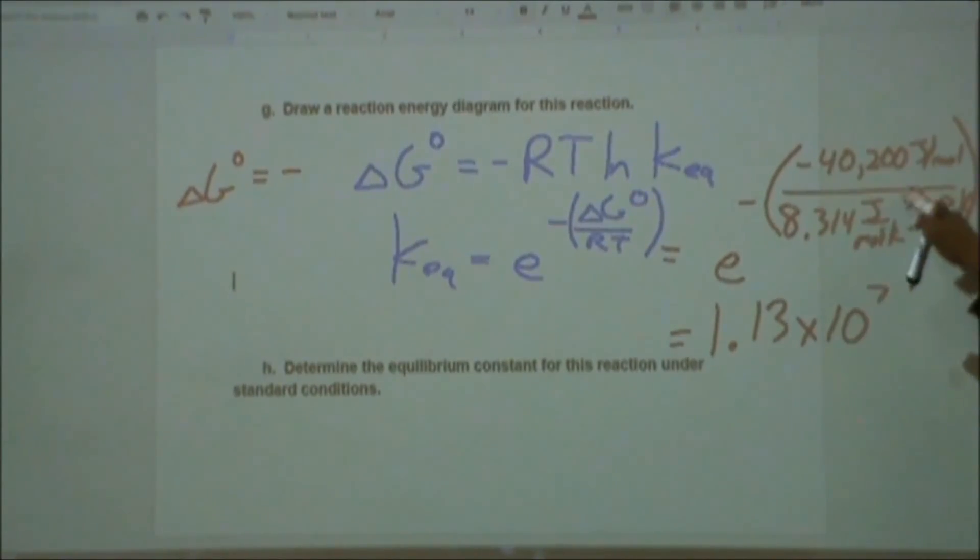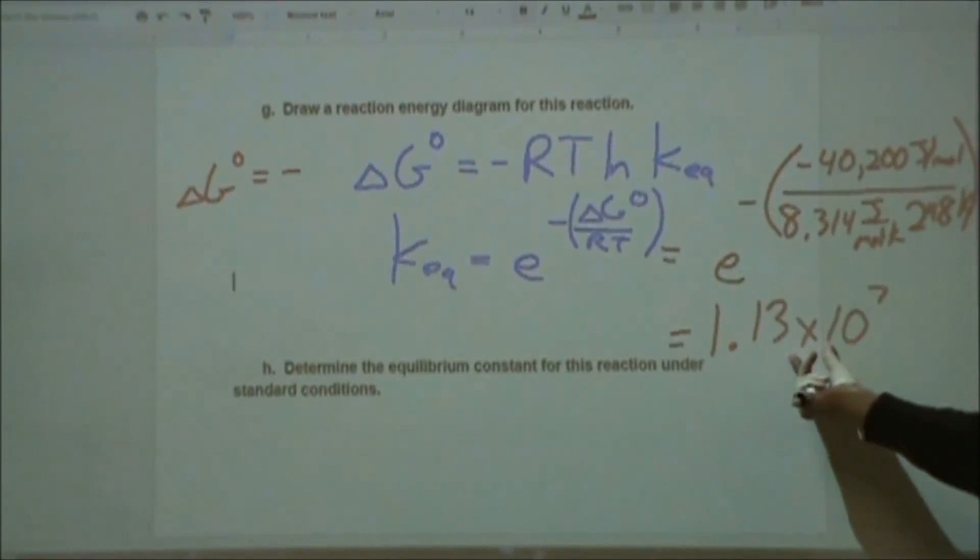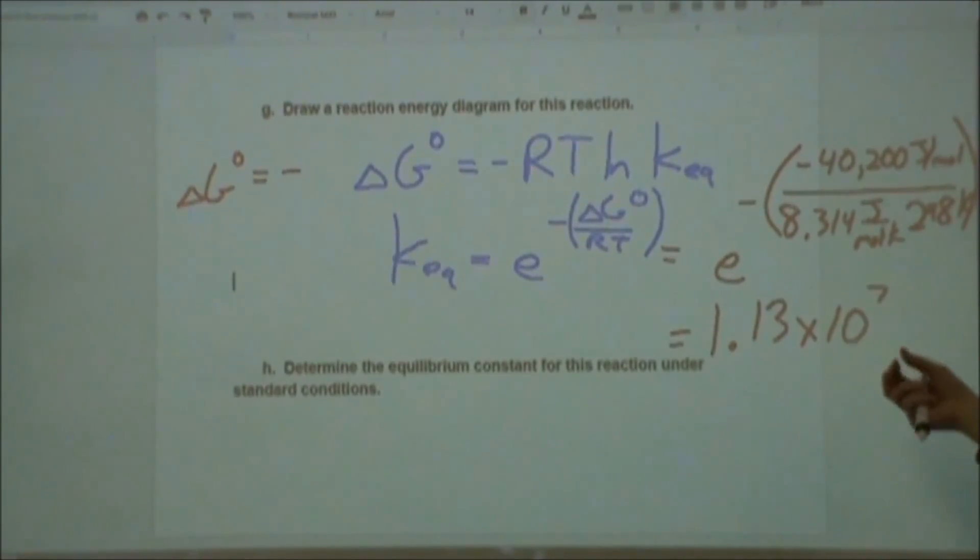But if you've never plugged one of these in before, there's a lot of missteps you can do. So you need the joules per mole to cancel with this, the Kelvins to cancel, to give you your unitless equilibrium constant. Because equilibrium constants don't have units, they're used with activity.